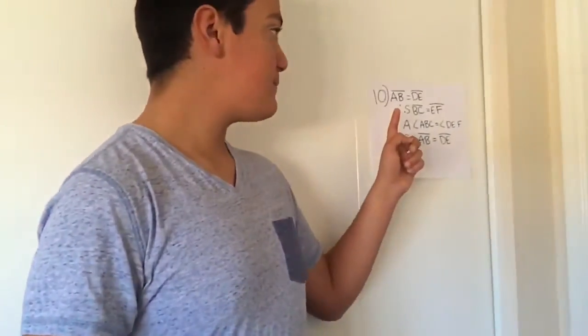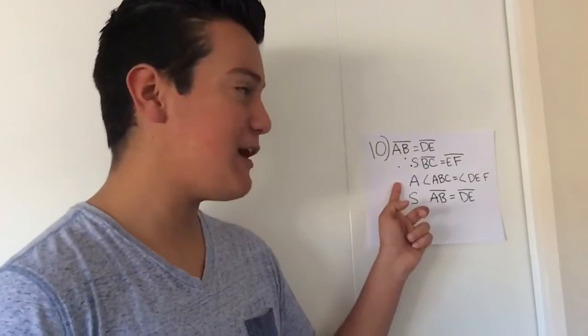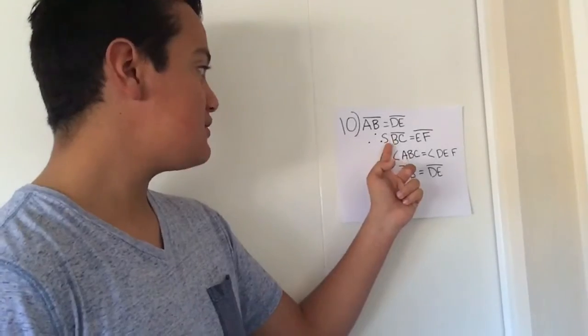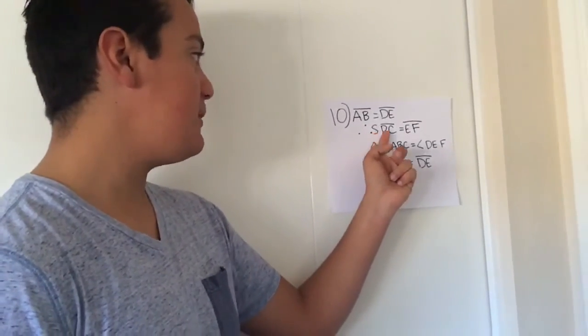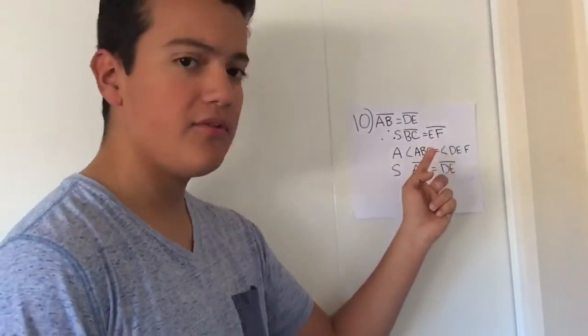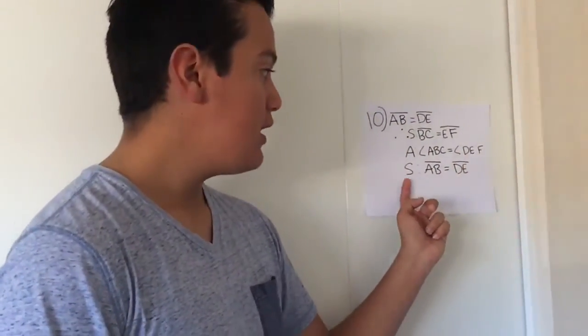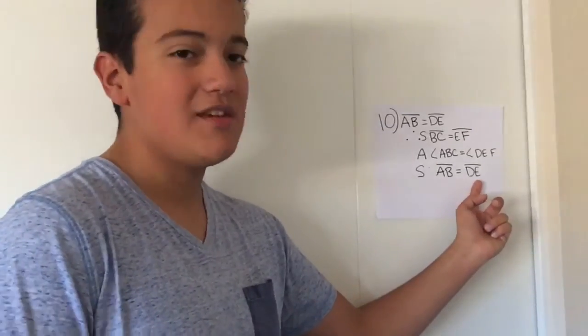So step 10, which is the last step, is that AB equals DE. Therefore, the side angle side: side BC equals side EF, and angle ABC equals angle DEF, and side AB equals DE.